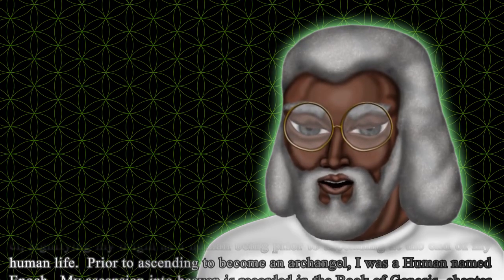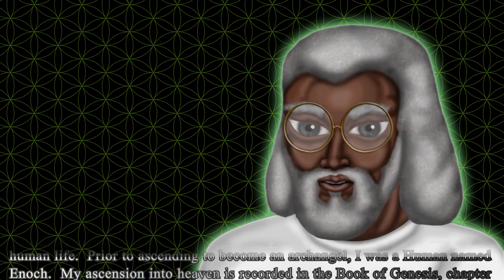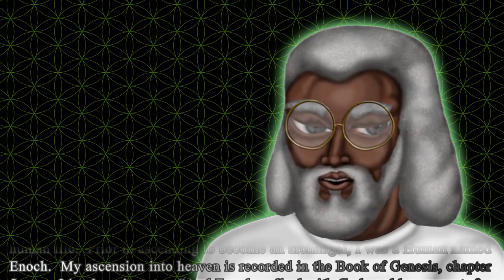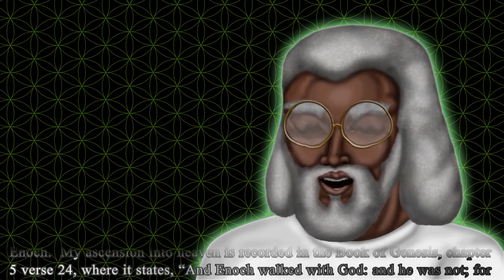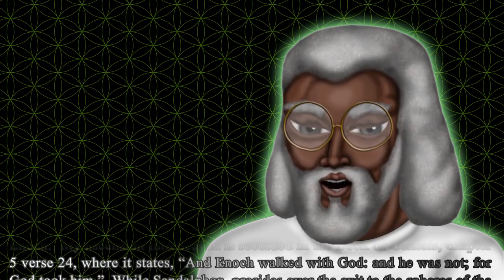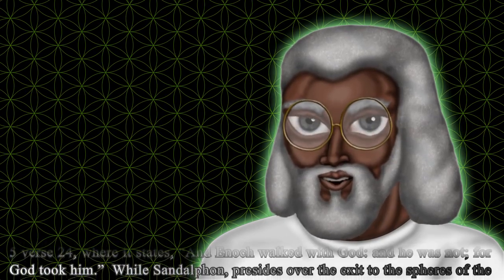Prior to ascending to become an Archangel, I was a human named Enoch. My ascension into heaven is recorded in the book of Genesis, chapter 5 verse 24, where it states: And Enoch walked with God, and he was not, for God took him.